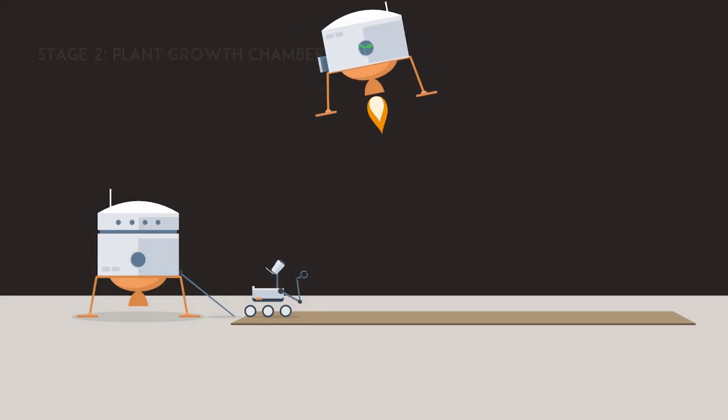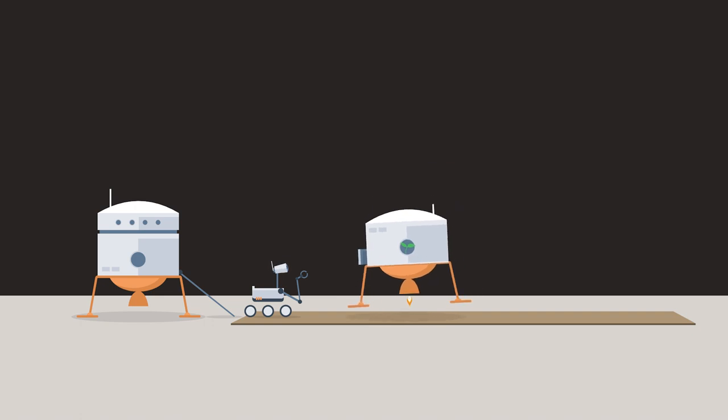The second lander, containing the Harvest Plant Growth Chamber, will then be deployed to the newly created Moon platform.